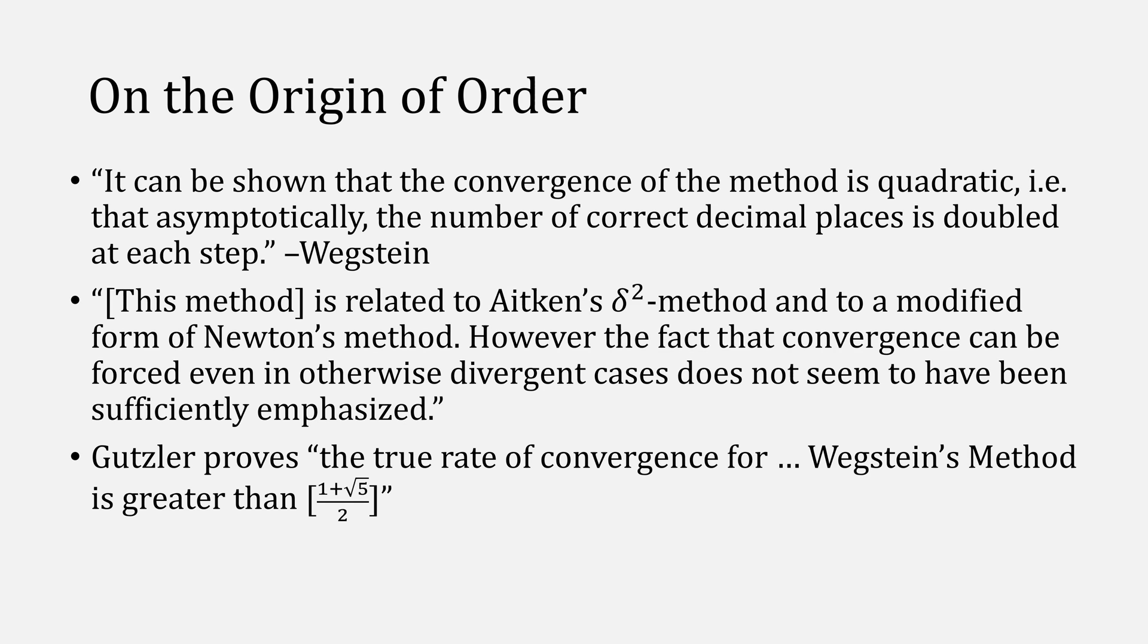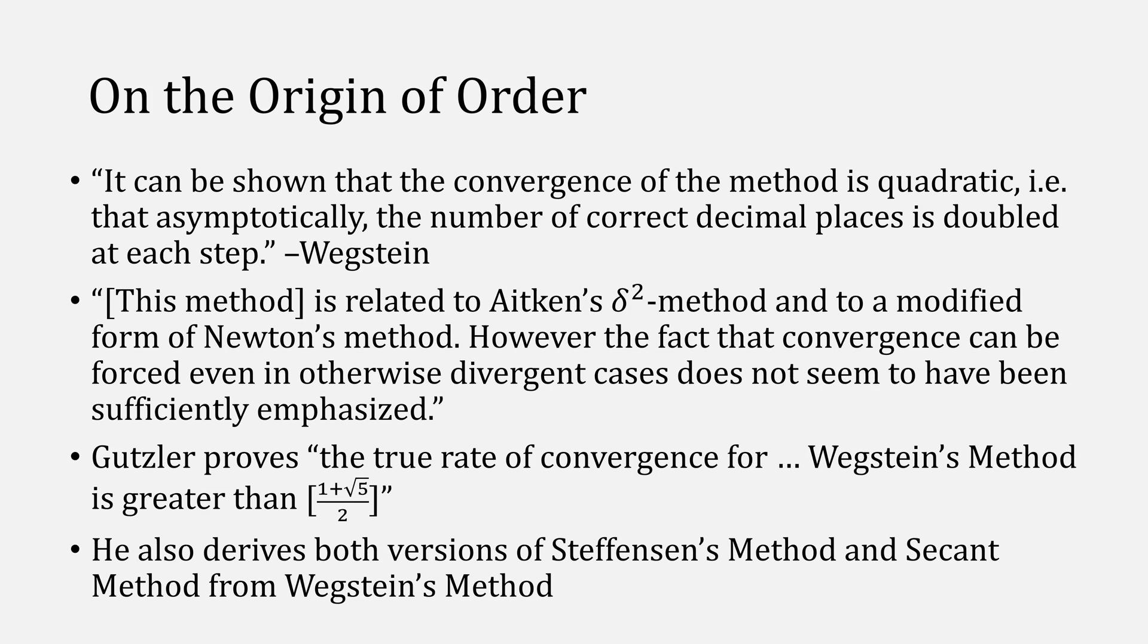In Gutzler's thesis, he's able to prove that the true rate of convergence for Wegstein is greater than 1 plus square root of 5 over 2, noting that it's probably quadratic. And he also derives both versions of Steffen's method, as well as Segen's method, from Wegstein's method.